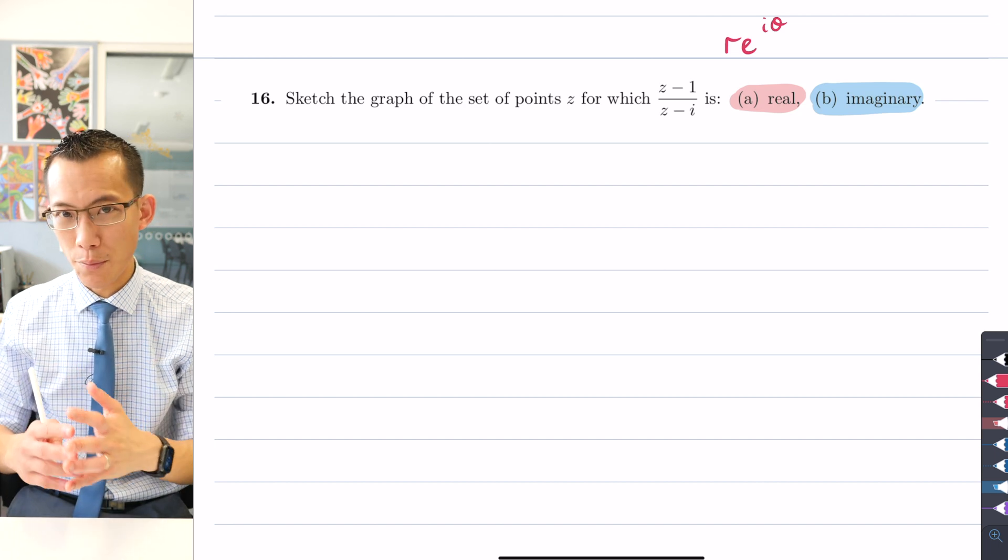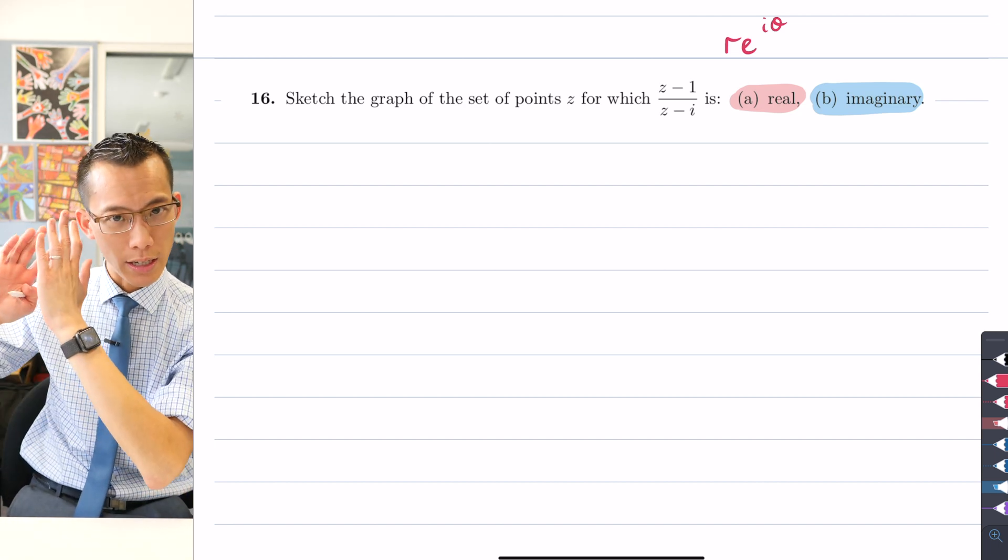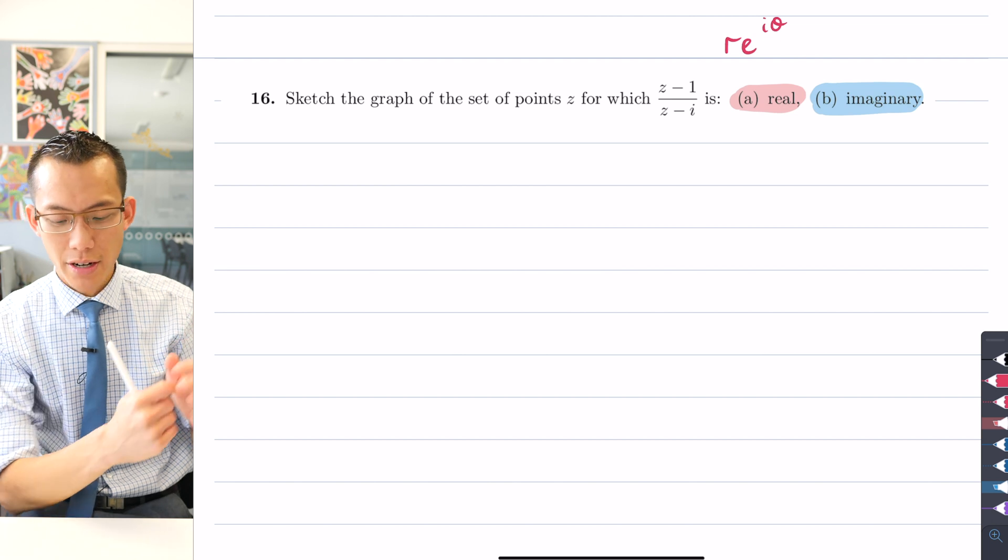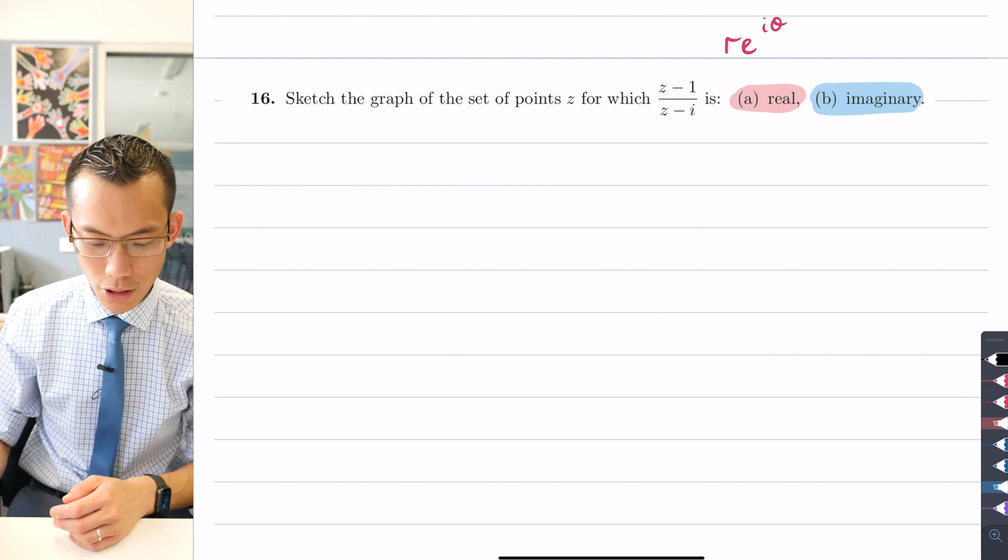You can more easily separate it in polar form, but you might as well go to the form that very cleanly distinguishes between here's the real part, here's the imaginary part, and that is Cartesian form that does the best job.